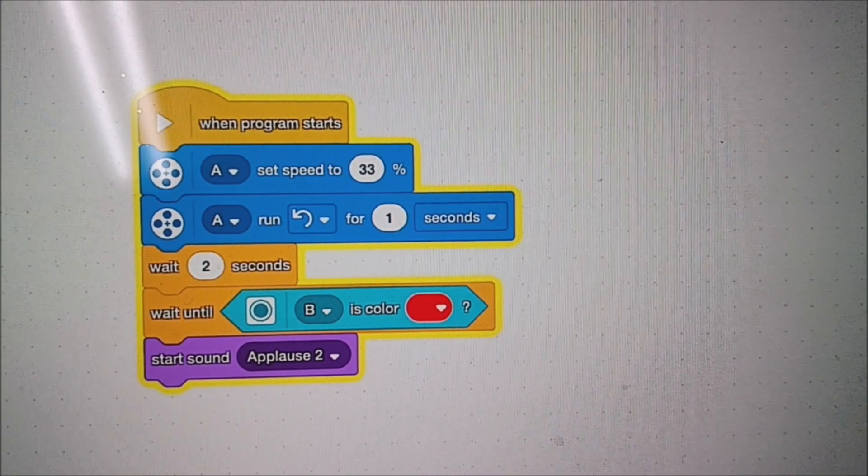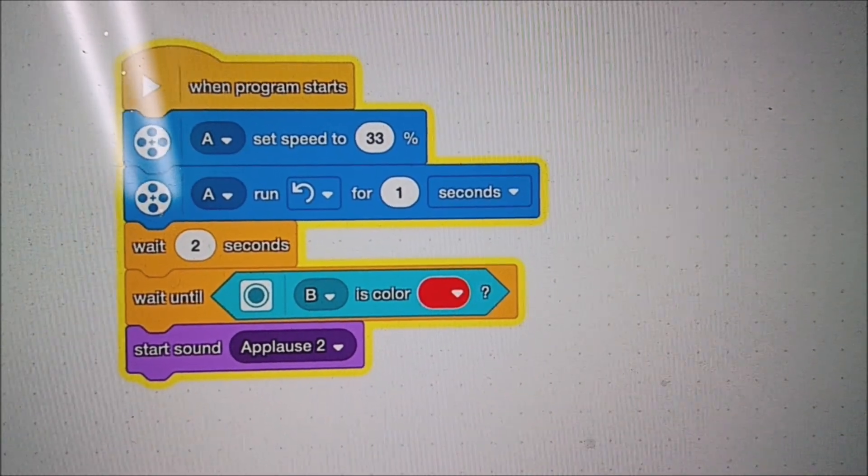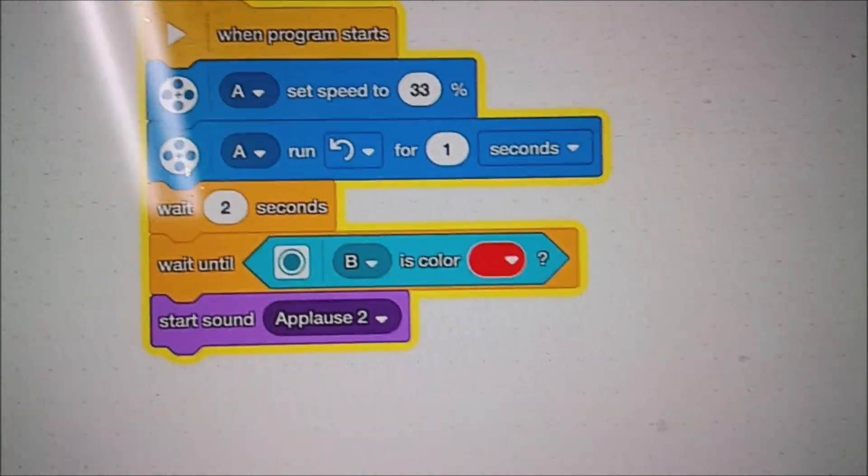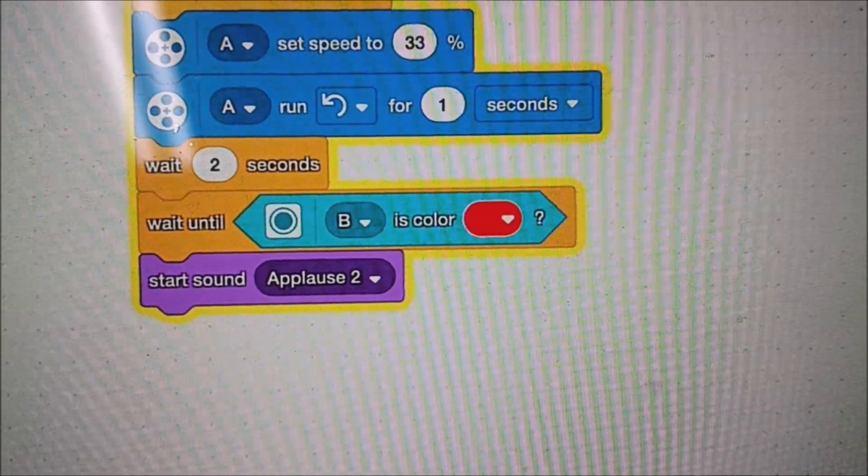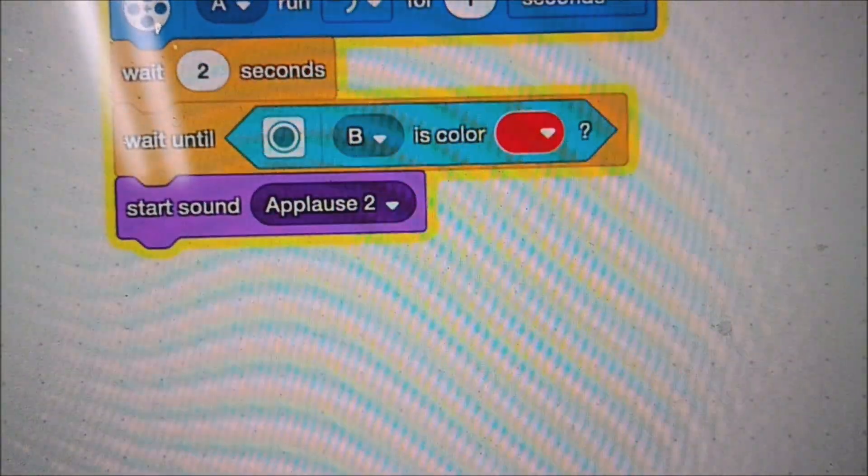Okay, so my program has motor A going at 33% speed. I don't know why I chose that, just a random number for one second. And I'm going to wait two seconds and then I'm going to have the color sensor look for that red ball and then we'll do an applause.